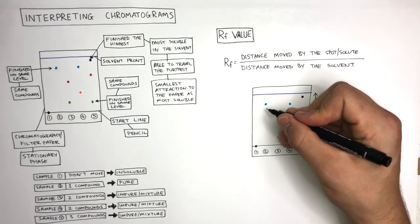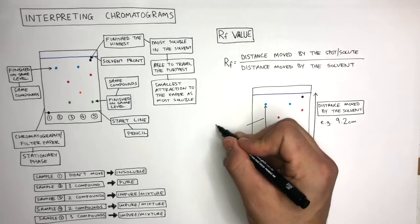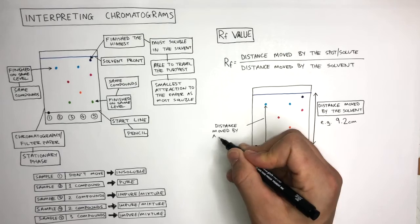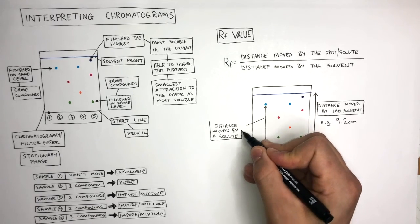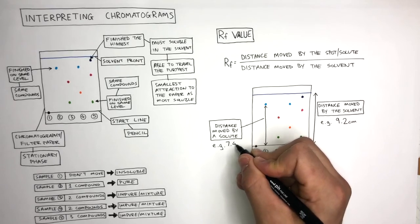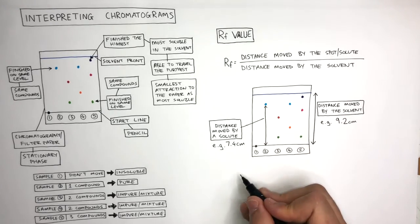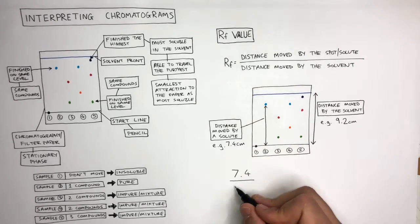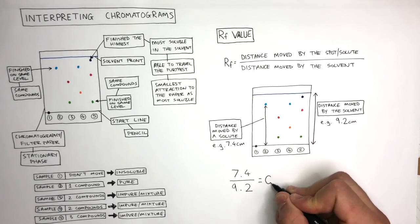And then choose a solute where you will use a ruler to measure the distance moved by the solute from that solute to the start line. For example, here is 7.4 centimeters. We then do 7.4 divided by 9.2 which equals 0.8.